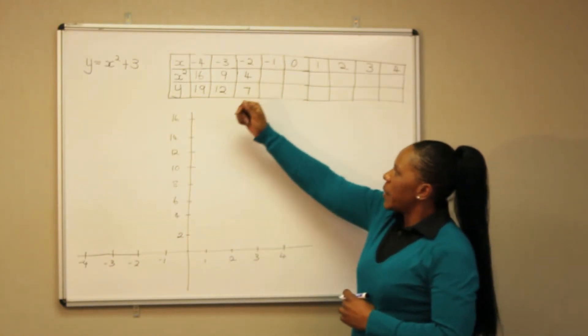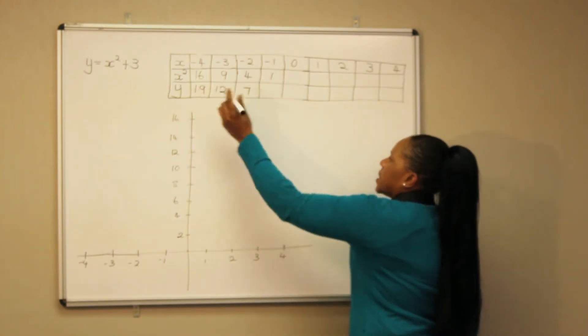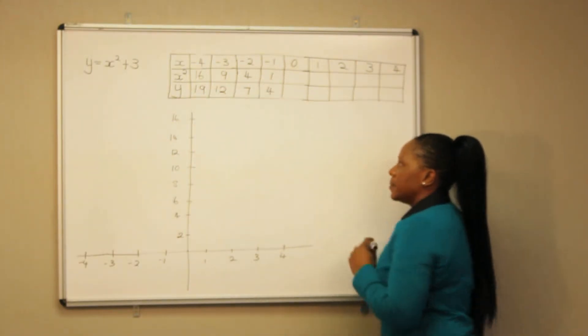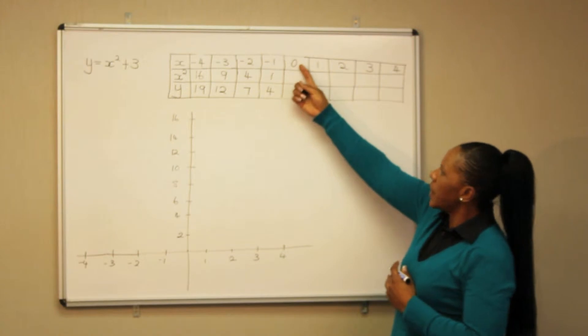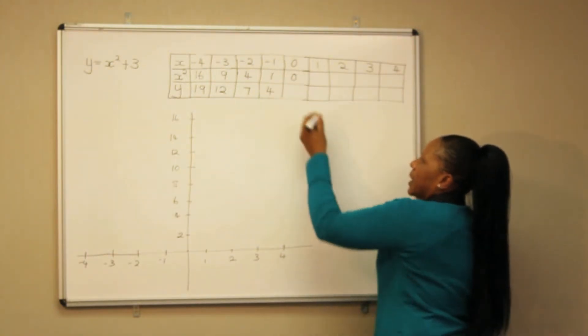Minus 1 squared our answer is 1, plus 3 we get 4. 0 squared is 0, plus 3 we get 3.